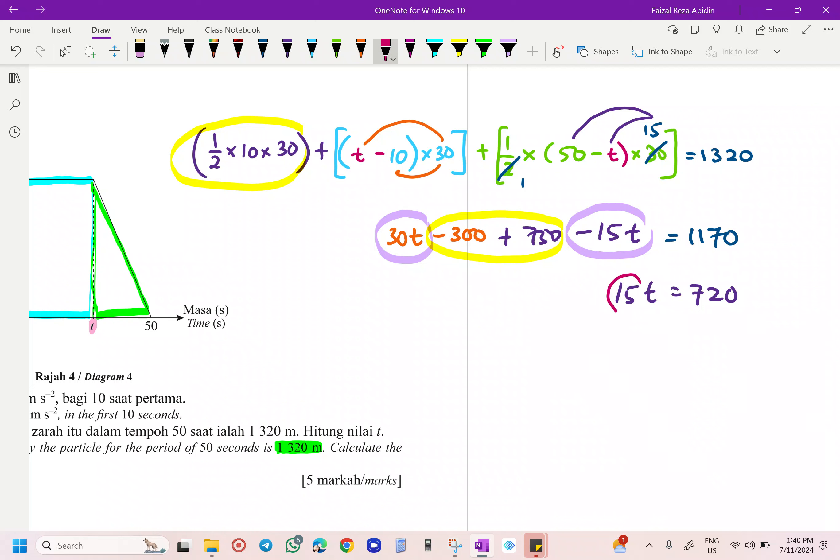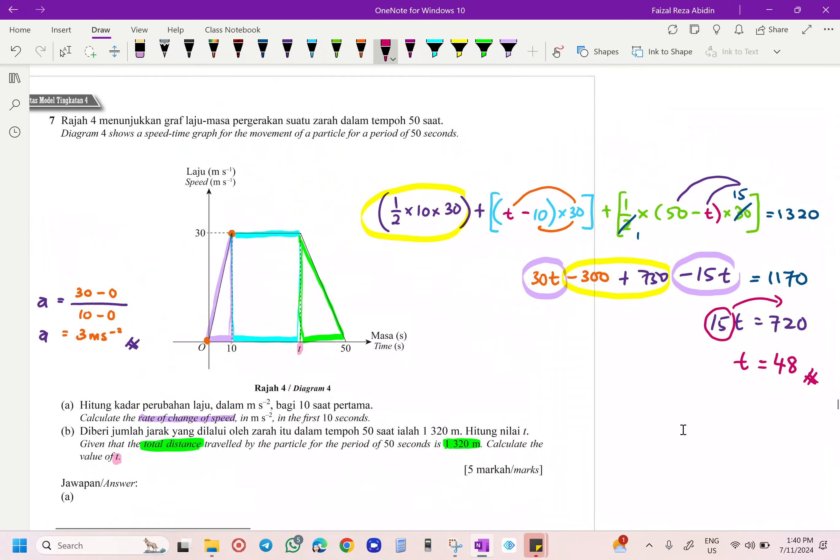You want to find T, right? Just bring 15 to the other side. So T here going to be 720 divided by 15. I am going to get 48 seconds. That is going to be our value of our T, divided by 15T.